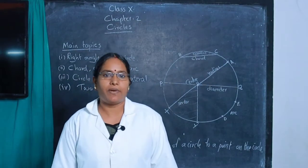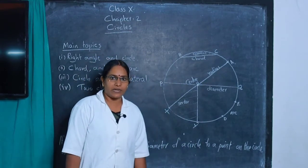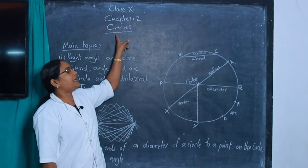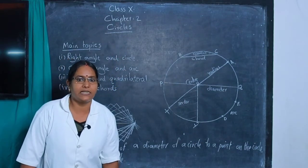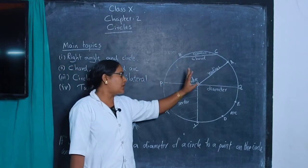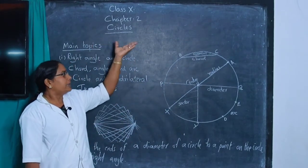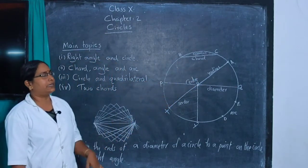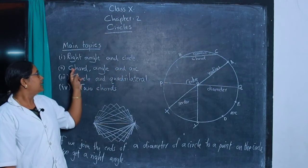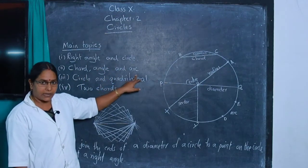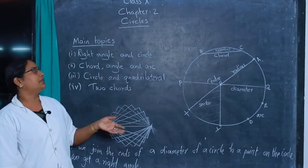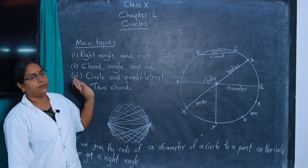Good morning students, welcome to my video class. You have already studied the first lesson on arithmetic sequences. Today I discuss the new lesson, chapter number two: circles. The main topics of this chapter are: right angle and circle, chord angle and arc, circle and quadrilateral, and two chords.